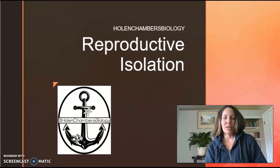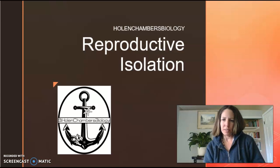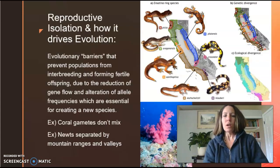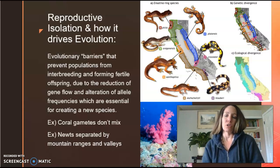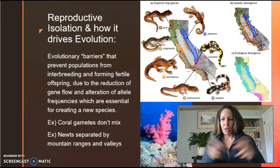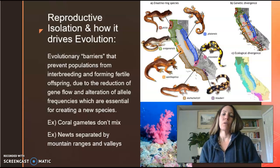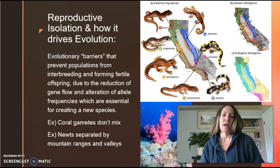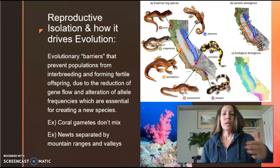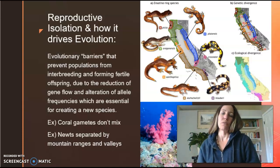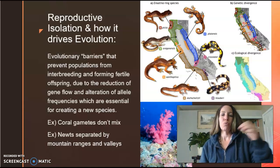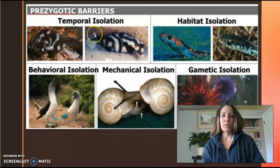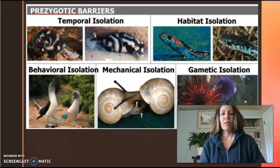Hey guys, this is Holin Chambers Biology coming to you with a lecture on reproductive isolation for our unit on evolution. The first thing we're going to talk about is how reproductive isolation drives evolution to begin with. We're going to be talking about barriers — physical barriers, sexual barriers, behavioral barriers — and all of this leads to the segregation and limited breeding opportunities for these organisms, and therefore drives speciation, the creation of a new species. We'll be covering two different types of reproductive isolation.